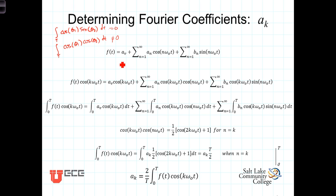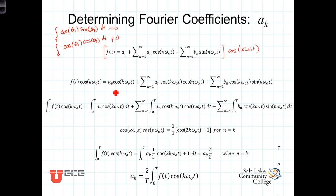Here's how we're going to use that. We're going to take our Fourier series expression and multiply both sides by cosine of k omega-naught t, where k is some integer. So on the left-hand side we multiply by cosine k omega-naught t, and on the right-hand side every term is multiplied by that — bringing that cosine k omega-naught t inside the sum since it's a constant as far as the summation is concerned.